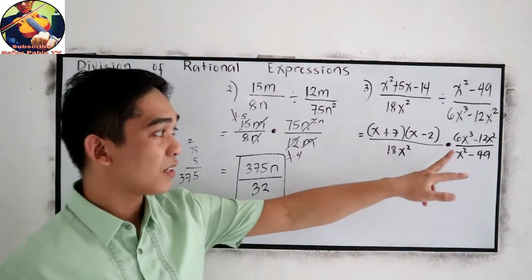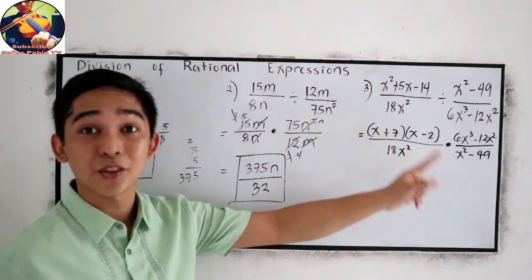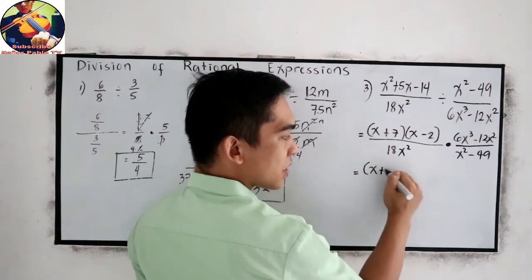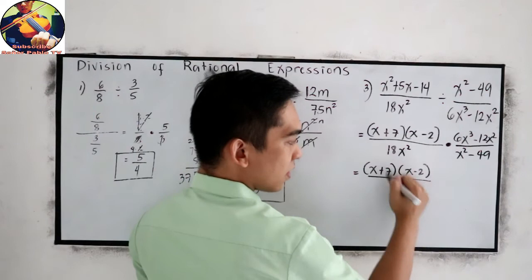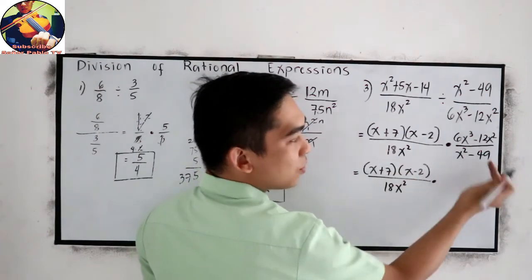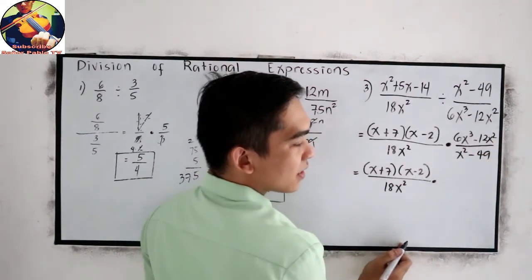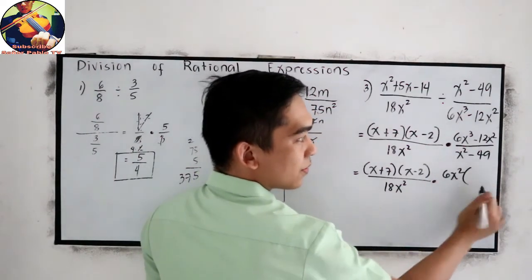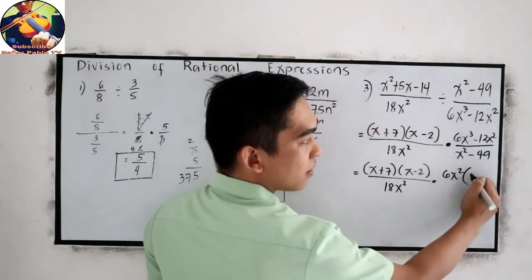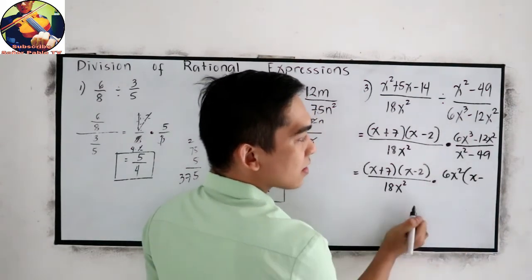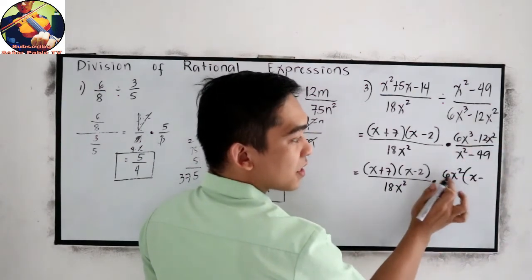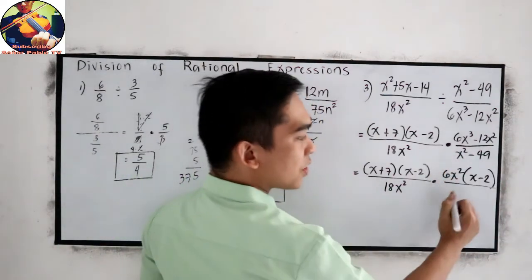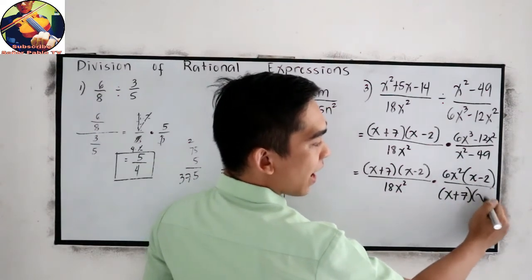After getting the reciprocal, let us factor out. Since it is already in factored form, just copy. Now, let us factor. The GCF is 6x squared. So 6x cubed divided by 6x squared is x, minus 12x squared divided by 6x squared is 2. All over, difference of 2 squares: x plus 7, x minus 7.